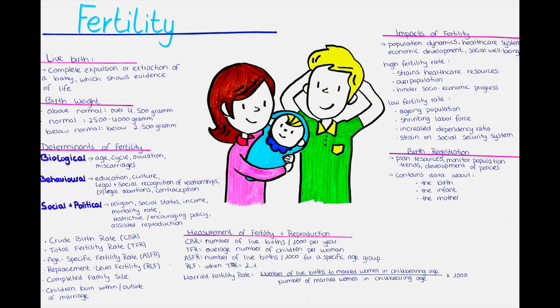The total fertility rate is the best single measure to compare fertility across populations differing in their age structure. The age-specific fertility rate measures the number of live births per 1,000 women in a specific age group. Completed family size reflects the average number of children born to women who have completed their childbearing years. The replacement-level fertility is said to have been reached when the total fertility rate is 2.1, meaning that roughly every couple has an average of two children. Other fertility rates include the married fertility rate and the unmarried fertility rate, calculated by dividing live births to married or unmarried women in childbearing age by the number of married or unmarried women in childbearing age, multiplied by 1,000.